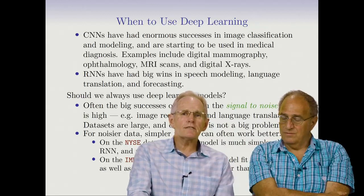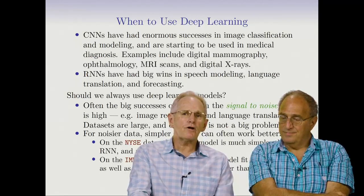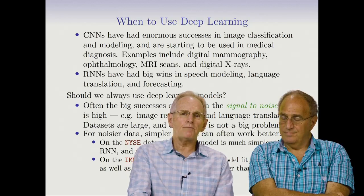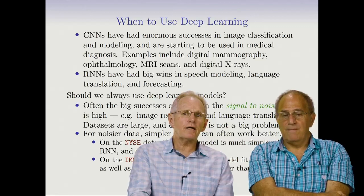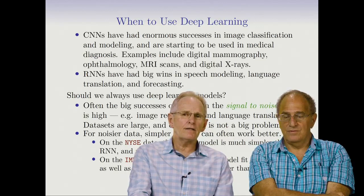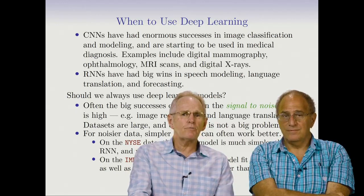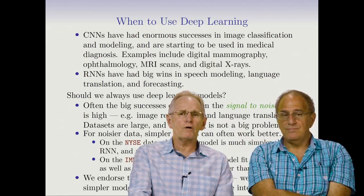For noisier data, simpler models can often work better. On the New York Stock Exchange data, the AR(5) model is much simpler than an RNN and performed just as well. On the IMDB review data, the linear model fit by Glmnet did as well as the neural network and better than the RNN. There are more sophisticated RNNs now that can do a bit better, but that requires a lot of work for quite small gains.